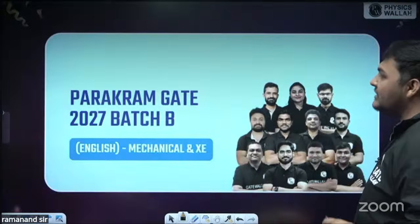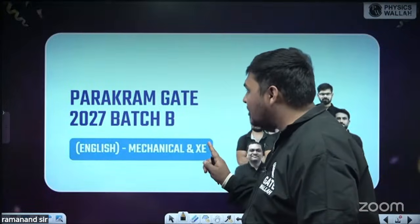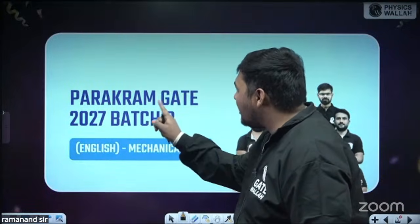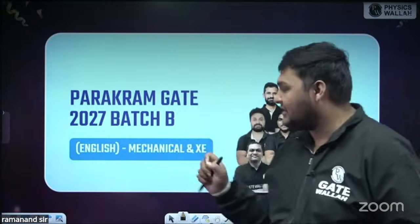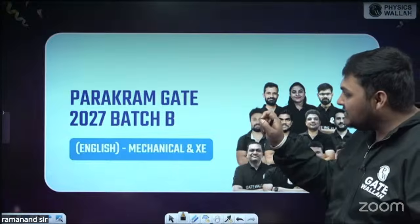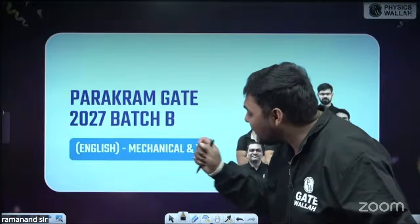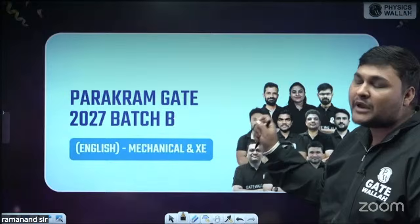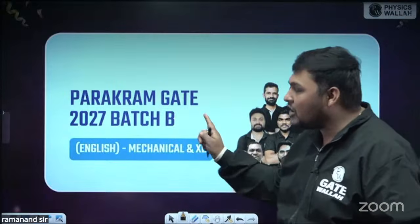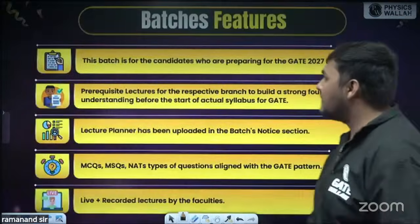Similarly, we are launching this batch for Mechanical and EXE branch also — Parakram Gate 2027 Batch B. The language of this batch will be English. We will cover the syllabus of Mechanical branch as well as EXE branch, so if you are preparing for EXE branch you can also join.